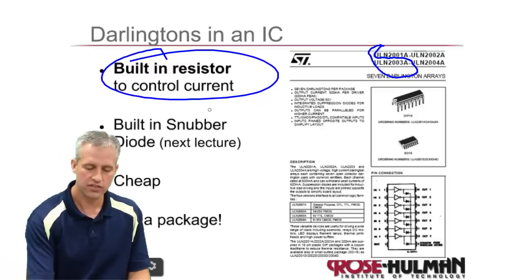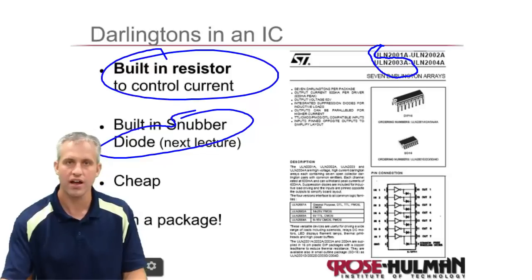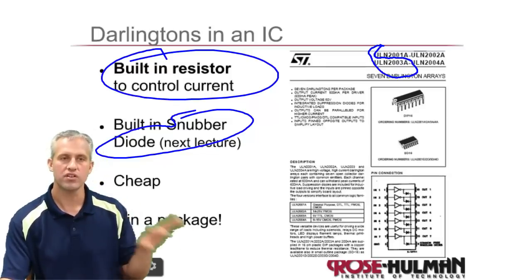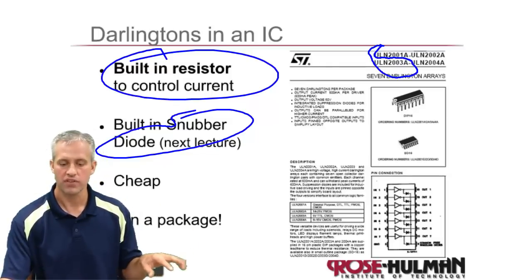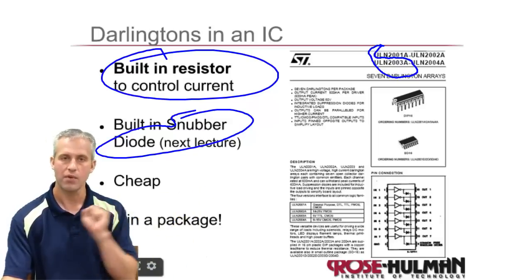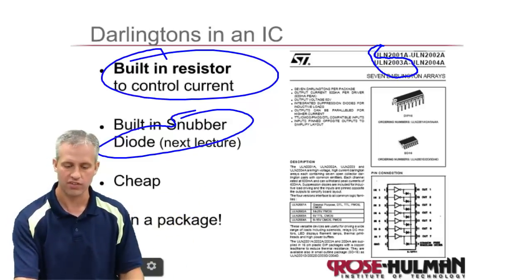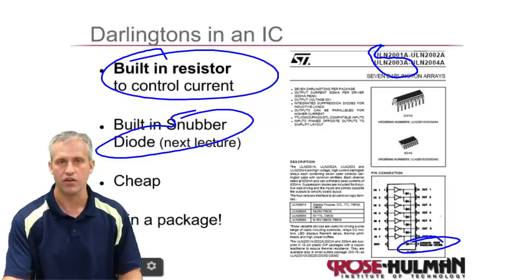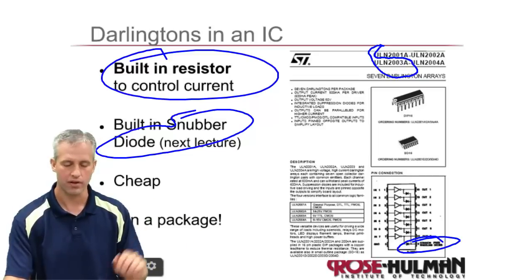The other thing which is nice is they build in something called a snubber diode. We'll talk about snubber diodes next time, but the fact that it's built in means one less thing you have to worry about. You don't need a resistor, and you also don't need a snubber diode.